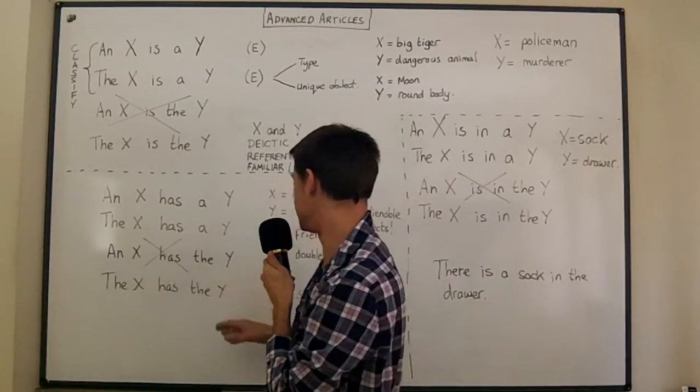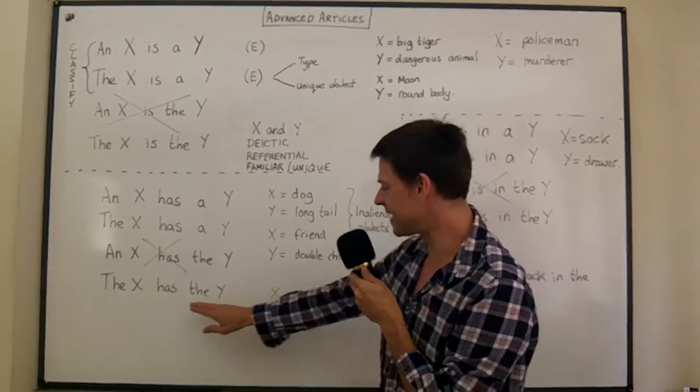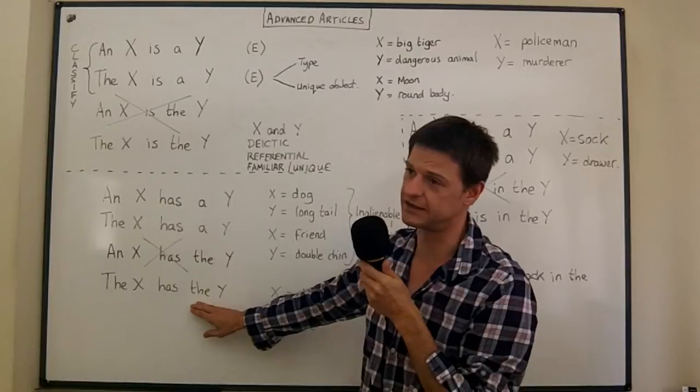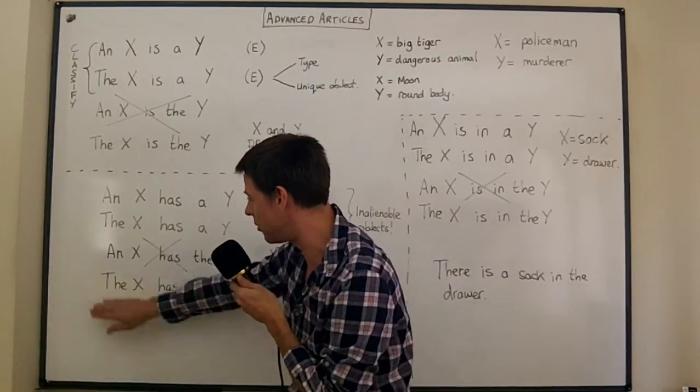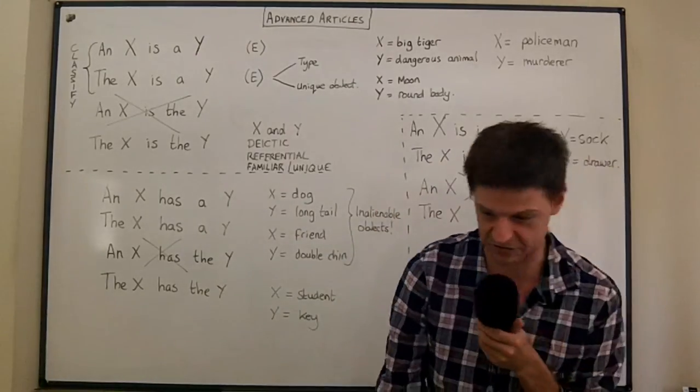A friend has the double chin - it's not acceptable. And the friend has the double chin, it sounds like you know which double chin. And again it's really quite odd. So hopefully you can see that for these, these two are the best ones, the best options.